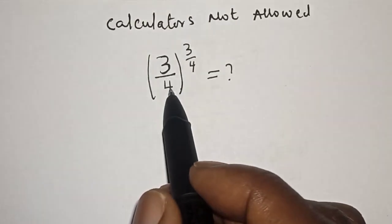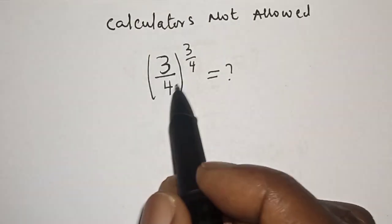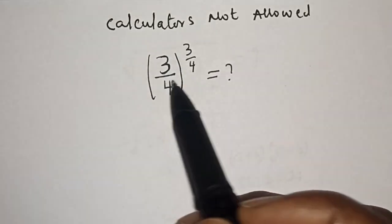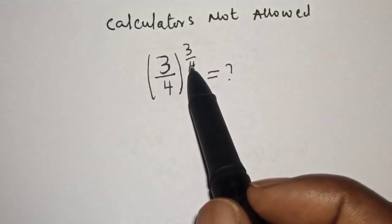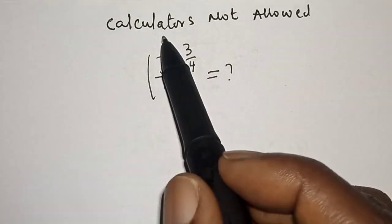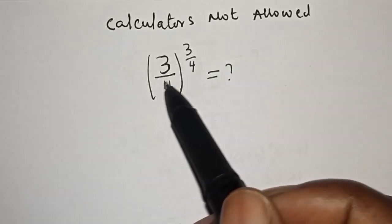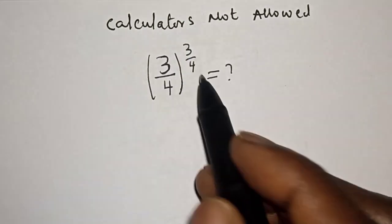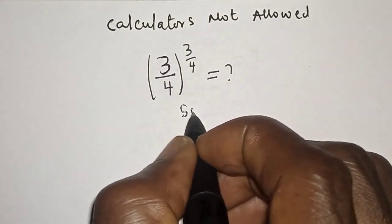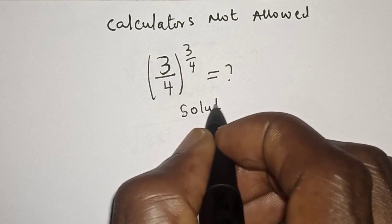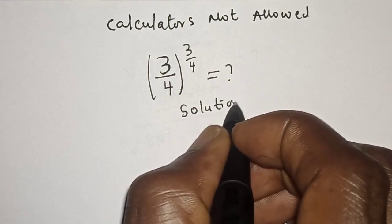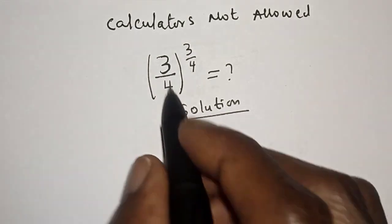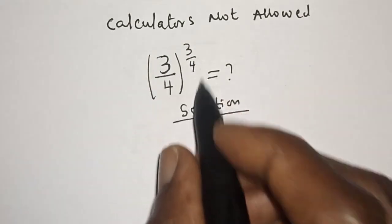3 divided by 4, raised to the power 3 over 4, is equal to what? Hi everyone, welcome to my class. In this class I want to simplify this math problem — remember calculators are not allowed. Please don't forget to like, share, comment, and subscribe. The solution: we have 3 over 4, raised to the power 3 over 4.